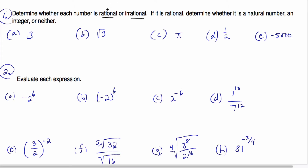Rational numbers can be written as a fraction, P over Q, where P and Q are real numbers. Real numbers are numbers that live on the number line, with zero in the middle, one and negative one on each side, and there's a continuous set of numbers between each of these.